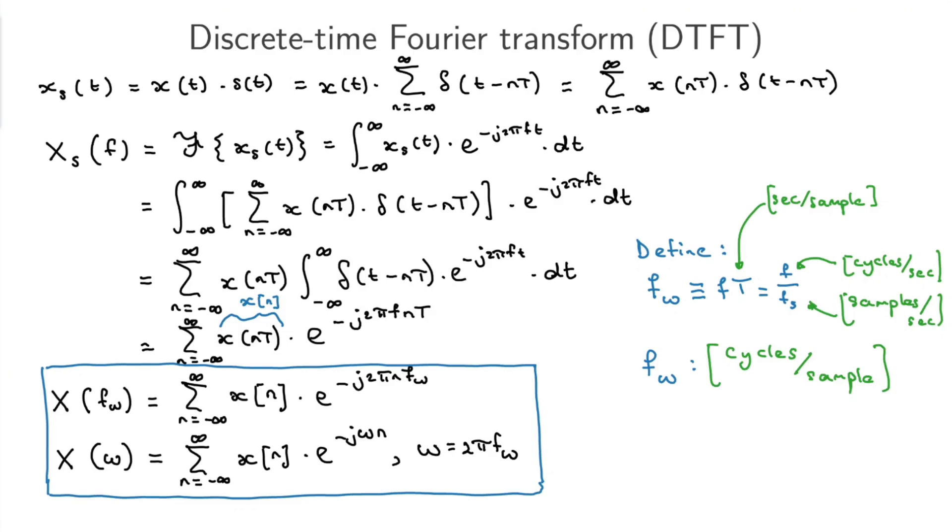And this will recap this again so that it really sinks in. Just quickly, the units for omega here, you can go through the same thing. It's radians per, not second, but per sample. And this whole thing is the discrete-time Fourier transform.